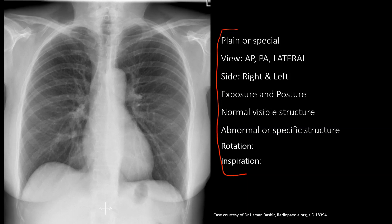Generally, chest x-rays are taken in the posterior-anterior view, but in emergency they are taken in the antero-posterior view also. 'L' is marked on the left side of the thoracic cavity, indicating the left side and the right side of the patient. Generally, chest x-rays are taken in the erect posture, but in an emergency where the patient cannot stand, x-rays are taken in the supine position. We should consider the posture of the patient.